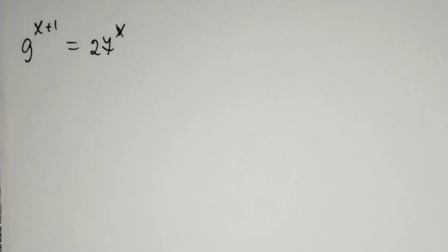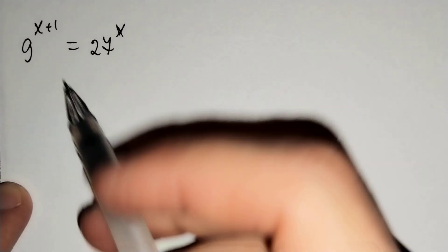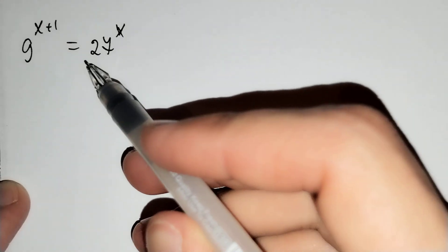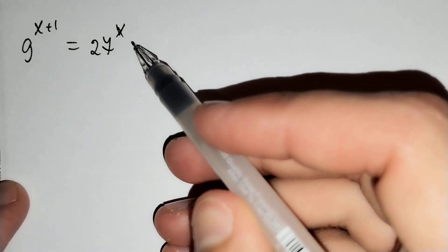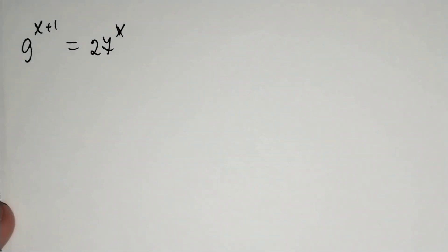Hi everyone, in this video we will solve this problem: 9 to the power of x plus 1 equals 27 to the power of x. How should we solve this problem?